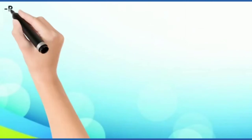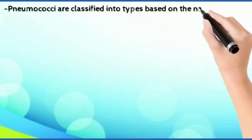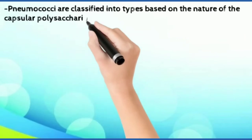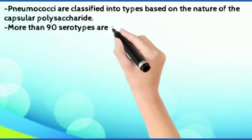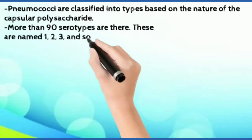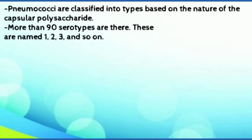Pneumococci are classified into types on the basis of the nature of the capsular polysaccharide. More than 90 serotypes are there, named as 1, 2, 3, and so on.